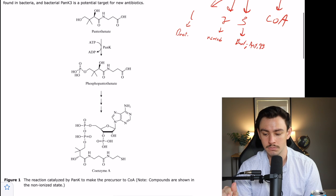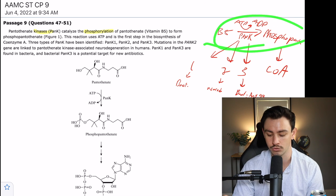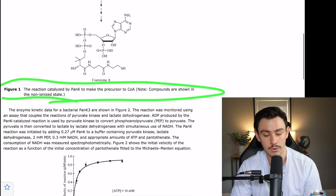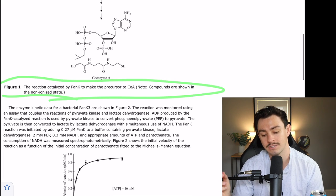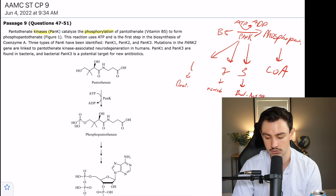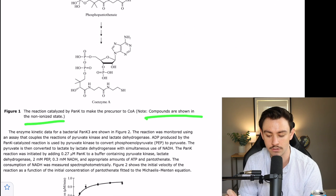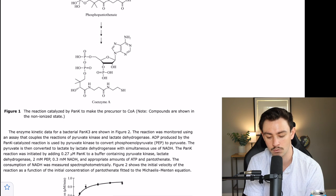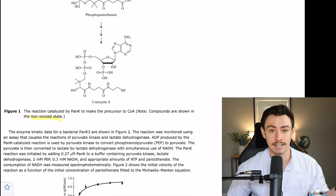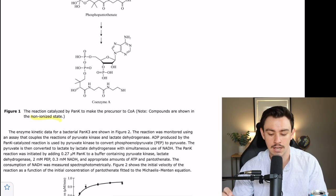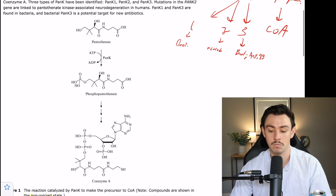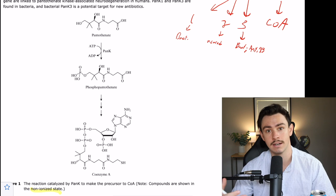Then it shows us this mechanism, which is just a line diagram of what we have drawn out. I skip diagrams and just go ahead and read the figure caption, which says this is the reaction that's catalyzed by panK to make coenzyme A. Note, the compounds are shown in their non-ionized state. That's kind of weird and fishy that they told me that. That tells me there is an ionized state. So I'm going to keep that in my back pocket, but maybe that's a little bit of foreshadowing. Maybe they're telling us we're going to have to look at these and tell them what the ionized state should be at a given pH.